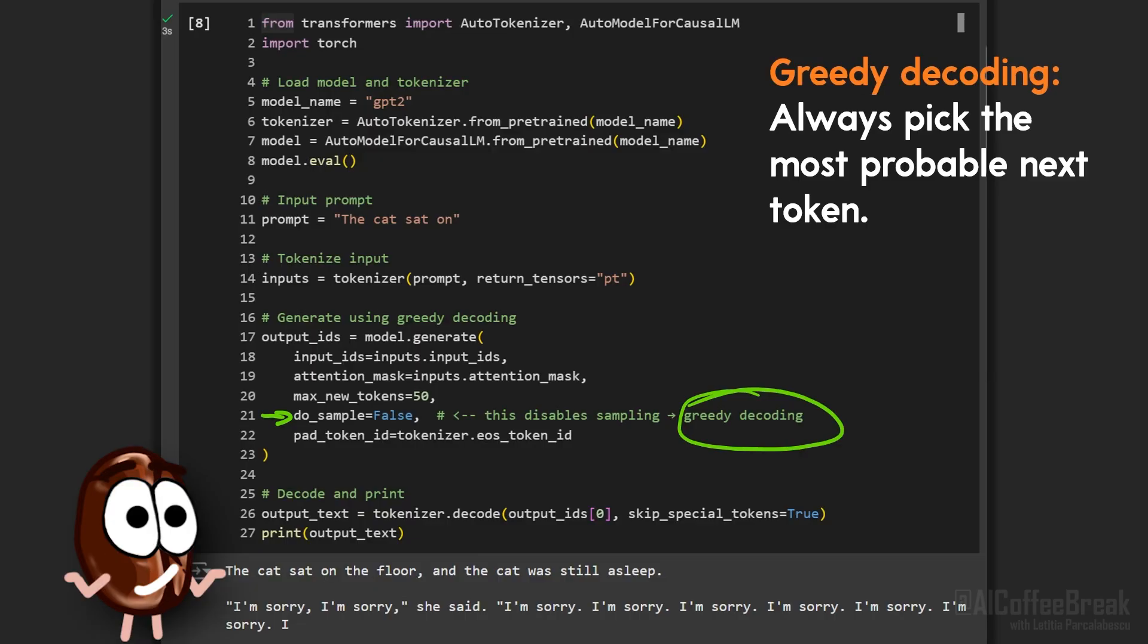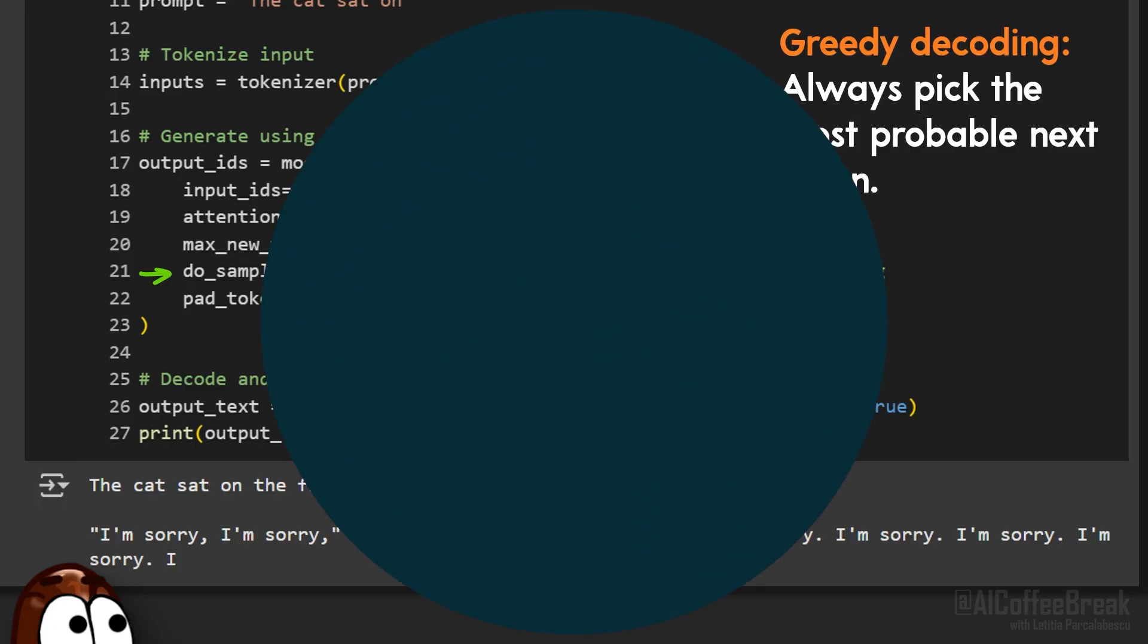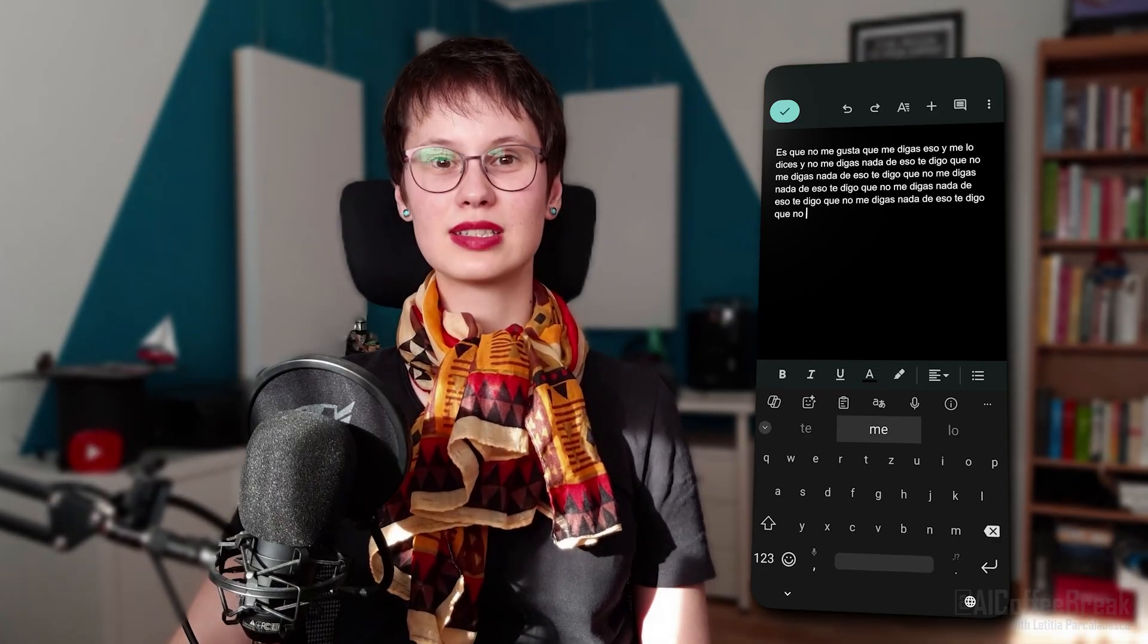If you take the safest option, you get output that's flat and even worse, repetitive, like I'm sorry, I'm sorry, I'm sorry. It's like always choosing the middle word on your phone's autocomplete. It quickly gets stuck in a loop. Because here's the thing: good writing and good conversation isn't about being constantly predictable. For something to feel interesting to read or listen to, it needs a balance between the familiar and unexpected. It should be half predictable, half surprising.